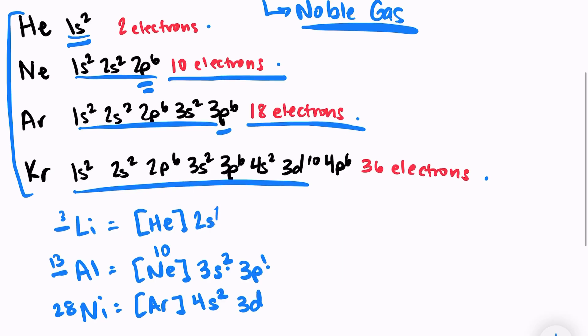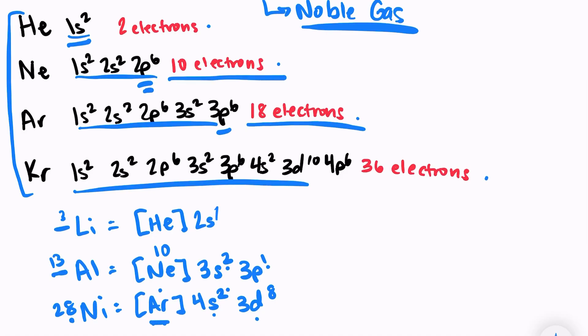And then I move into 3d. And let's see, I have 18 plus 2 is 20. I need 28. So I'm going to put 3d8 there. So argon, 4s2, 3d8. And see how much time that saved us instead of having to write out this whole part of the electron configuration. I just wrote argon in brackets.